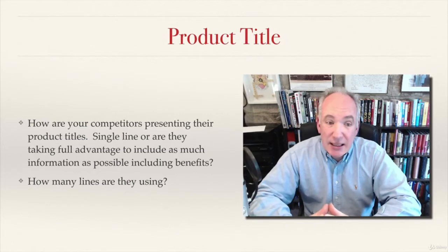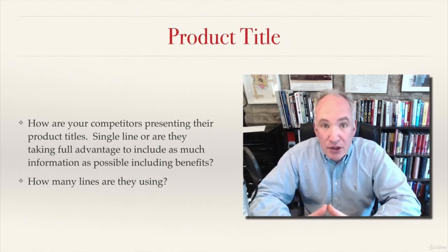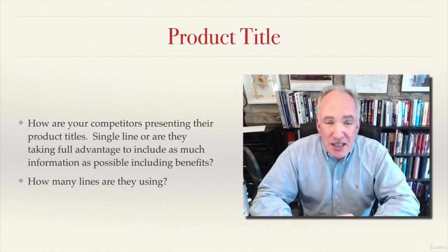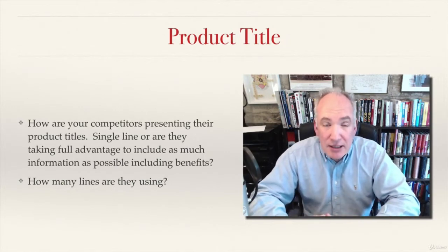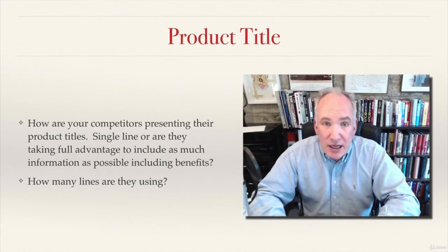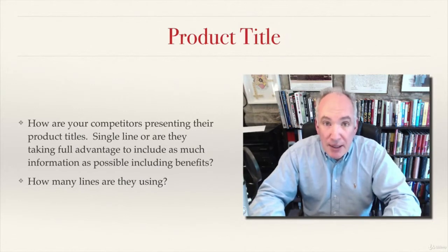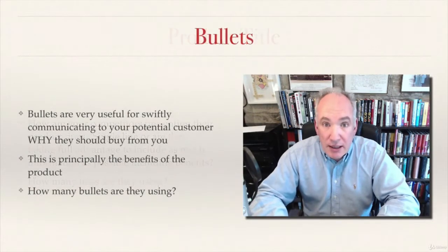The first thing to look at is the product title. The question is: how are the competition presenting their product? You're not looking at the detailed words, just how many lines they're taking up and how detailed the description is. If it's only a single line, they're giving away space they could be using to promote their products, which tells you immediately they are weaker competition.